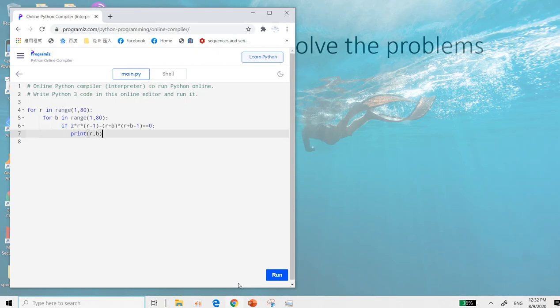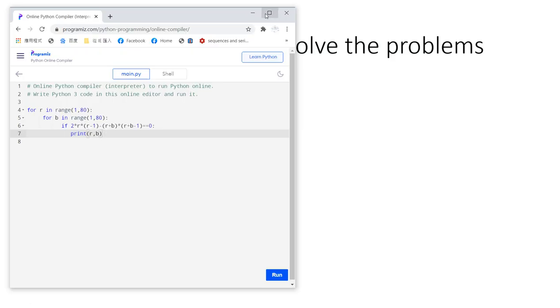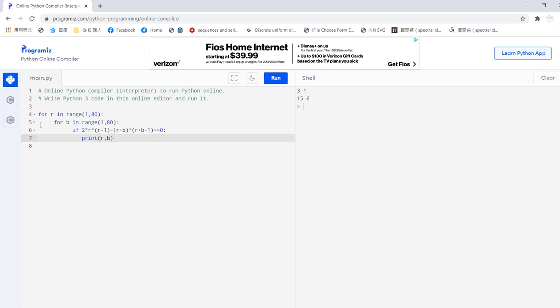So how about we go to see online Python code? I know Python compiler, I just plug the answer. In this case, I solve 1 to 80, so I can run it. I search r from 1 to 80 and I search b from 1 to 80, this is what I get. We get r equals 3, b equals 1, or r equals 15, b equals 6.